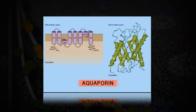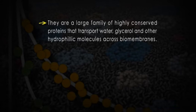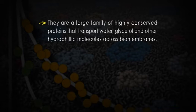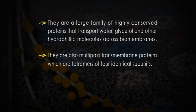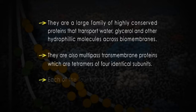Another group of transmembrane proteins are the aquaporins. They are a large family of highly conserved proteins that transport water, glycerol and other hydrophilic molecules across biomembranes. They are multi-pass transmembrane proteins which are tetramers of four identical subunits. Each of the four subunits has six membrane-spanning alpha helices.